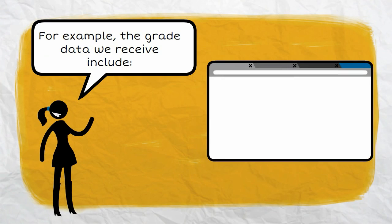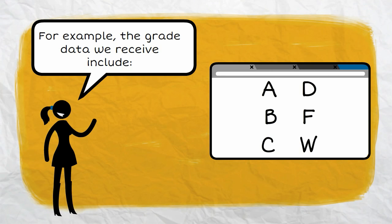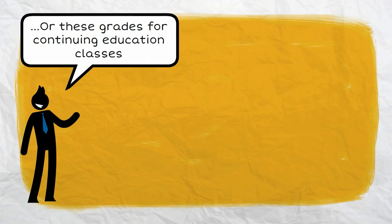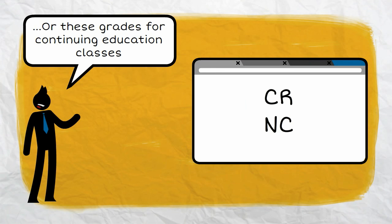For example, the grade data we receive include ABC, DFW. Or these grades for continuing education classes, CR or NC.